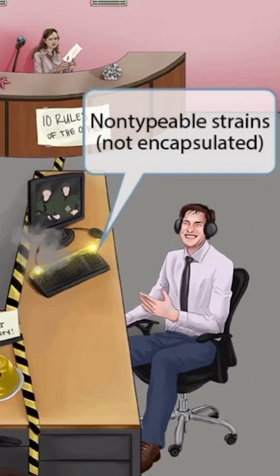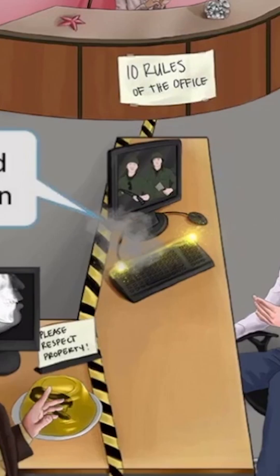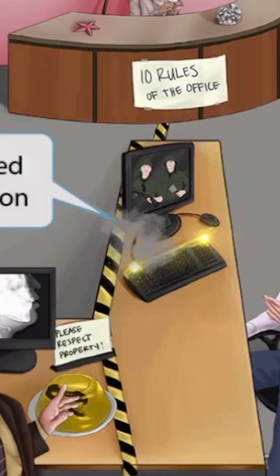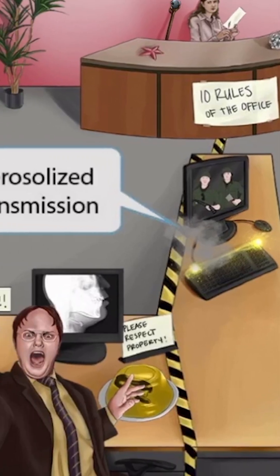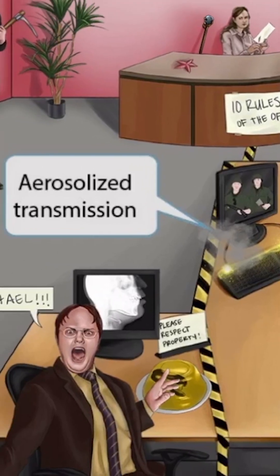Because there is no jello on this side of the tape, we can deduce that these strains are not encapsulated. Also notice that smoke is rising from the keyboard as it breaks. We've used clouds of mist or fog in our other images to represent aerosolized transmission, but in this image it seemed more memorable to show smoke rising from the keyboard. So the smoke rising from the keyboard is here to help you remember that H. flu exhibits aerosolized transmission. The smoke is crossing over the tape, so this should help you remember that both typable and non-typable strains exhibit aerosolized transmission.